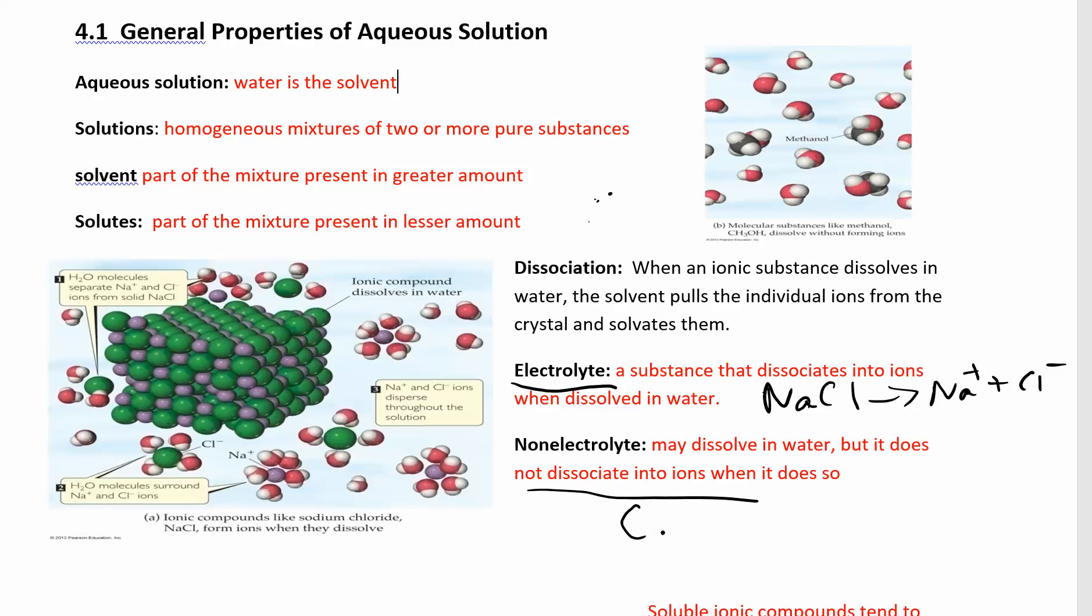If you had something like sugar, glucose, C6H12O6, when you put that in water, it stays together. It doesn't split up into like carbons and hydrogens and oxygens. It just stays like one complete unit. That's a non-electrolyte. You can dissolve sugar in water, right? It dissolves, but it doesn't dissociate. It doesn't split up into ions. It stays in its molecular form.